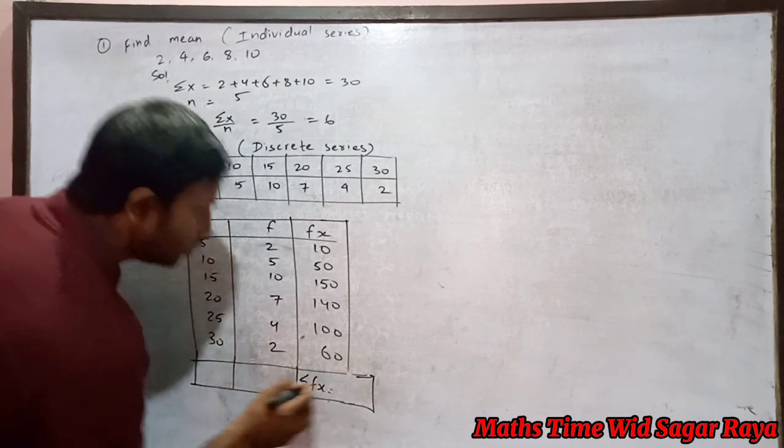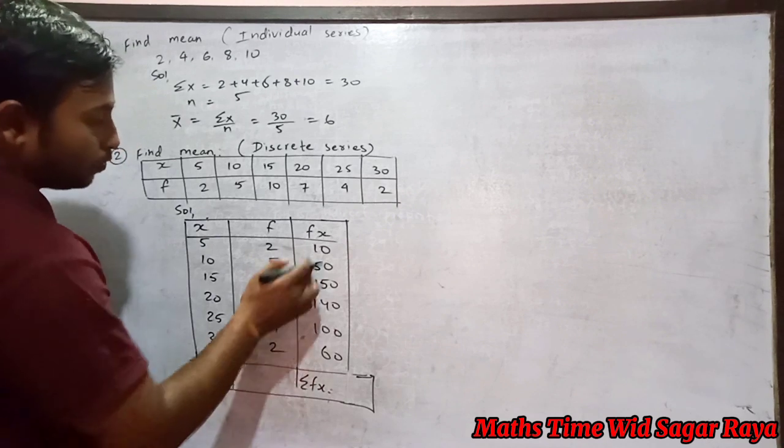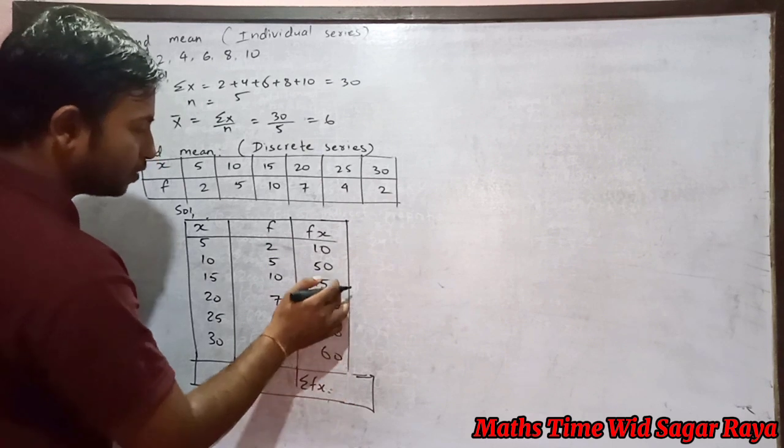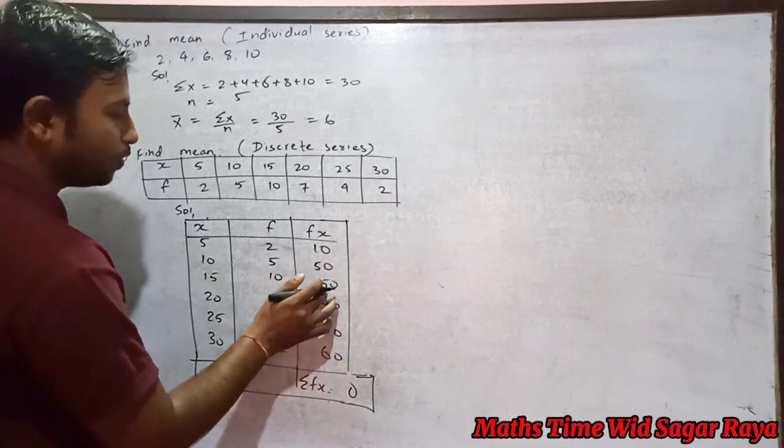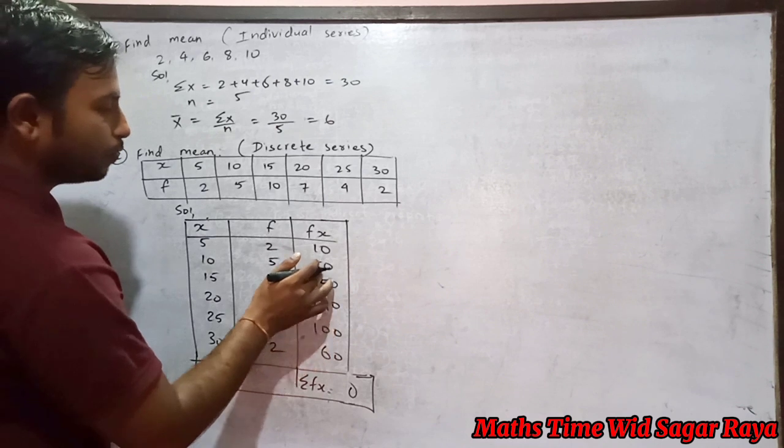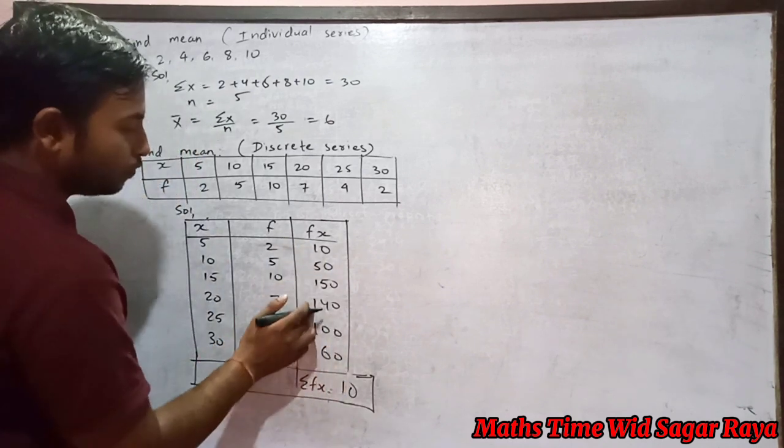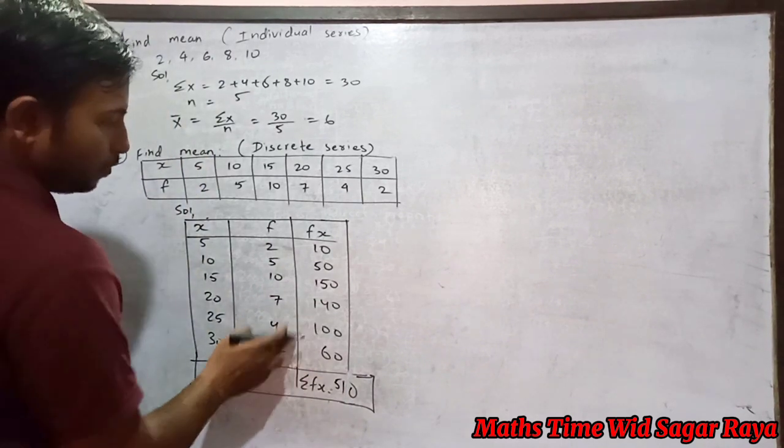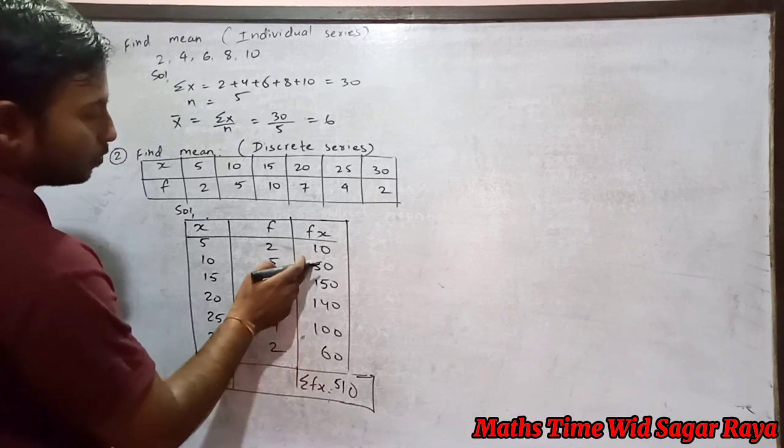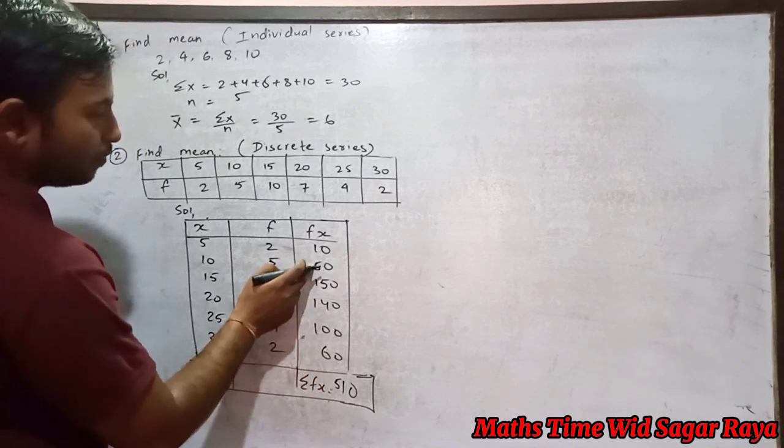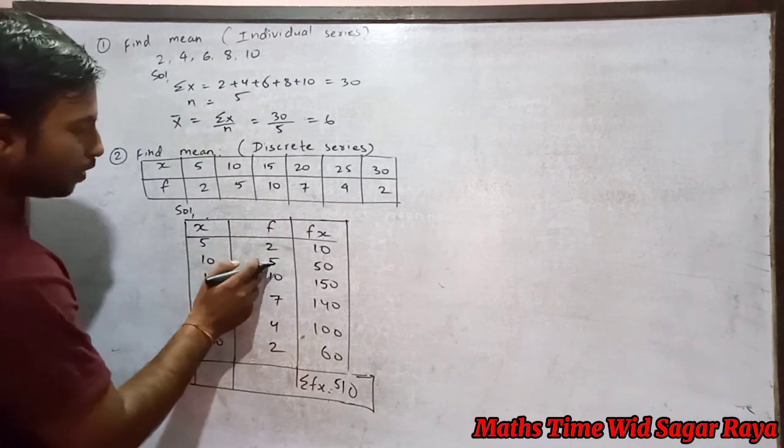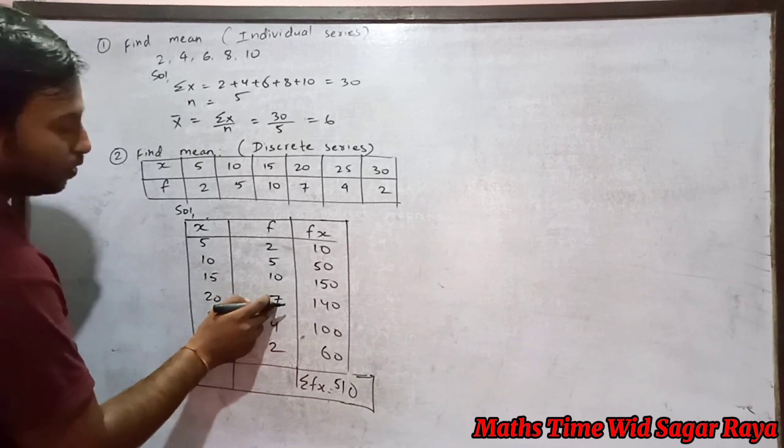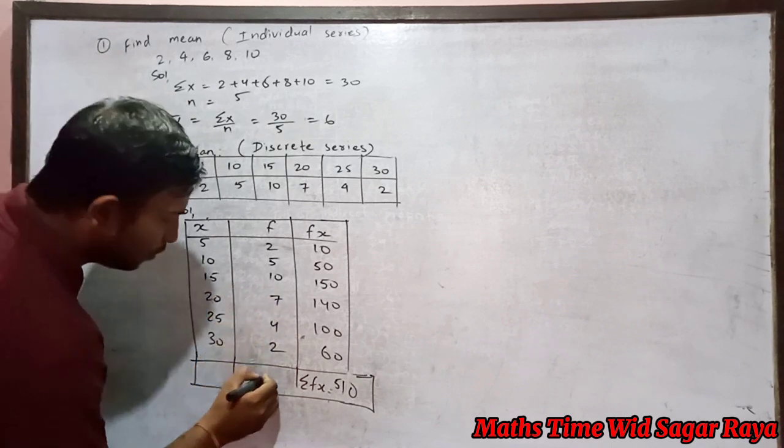Sigma fx means we have to add all. 10 plus 50 is 60, plus 150 is 210, plus 140 is 350, plus 100 is 450, plus 60 is 510. Now let's add the frequency also: 2 plus 5 plus 10 plus 7 plus 4 plus 2. So our total frequency equals 30.